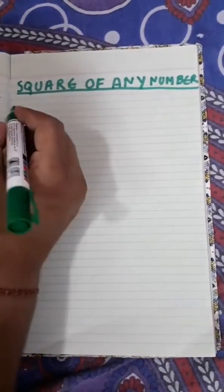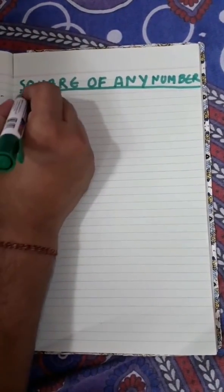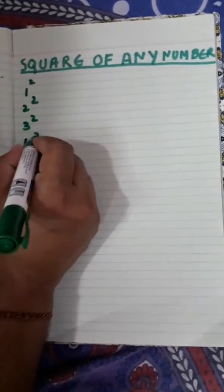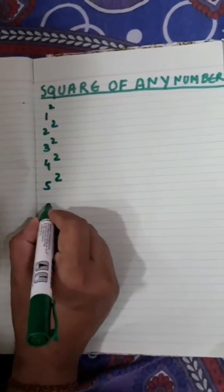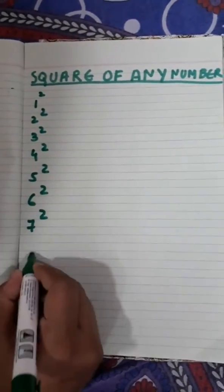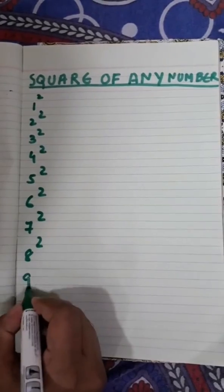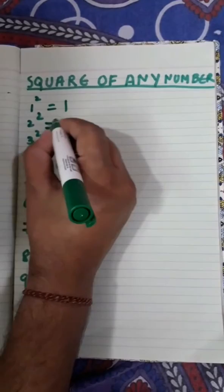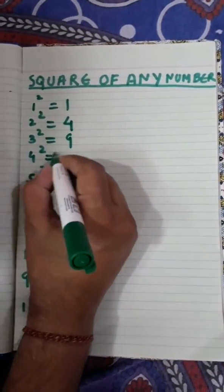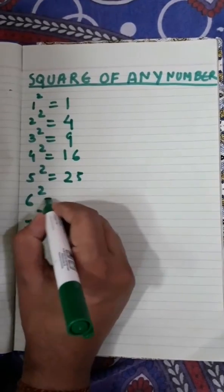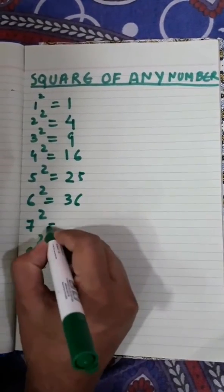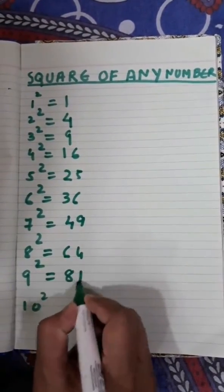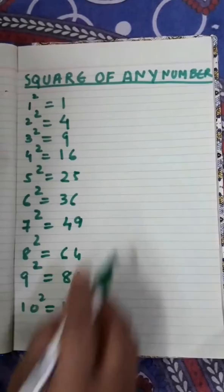For that, we need to know the squares of 1 to 10: 1² = 1, 2² = 4, 3² = 9, 4² = 16, 5² = 25, 6² = 36, 7² = 49, 8² = 64, 9² = 81, 10² = 100. This is a basic requirement you need to know.